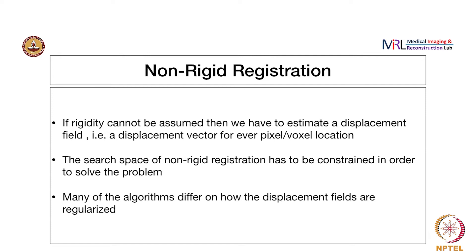This is the general approach to non-rigid registration. There has to be an estimation step of the deformation fields, followed by regularization over the estimated fields, so that you can limit the search space. In many problems the loss function is regularized so as to obtain a displacement field which is smooth and constrained. In some cases, once you estimate the displacement fields, you can then regularize them. We are going to look at two different methods which do that.